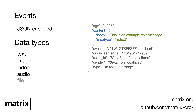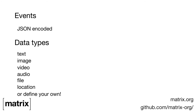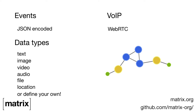Text, images, video, and audio are all supported. VoIP calls use WebRTC, with Matrix initializing the call. For conference calls, you can connect to a service like FreeSwitch via the Matrix Application Service API.